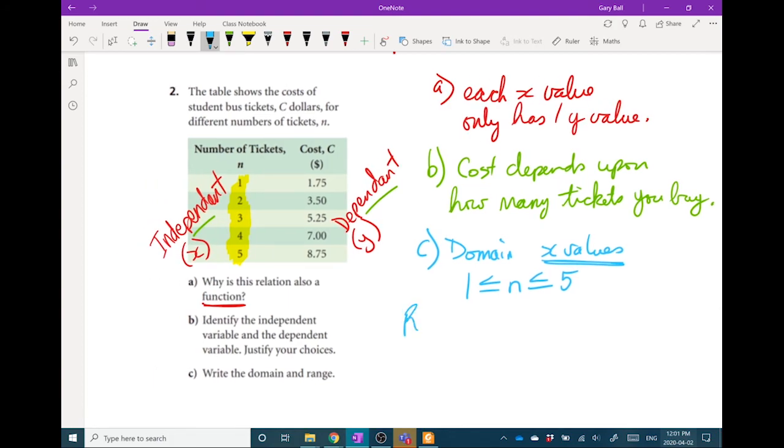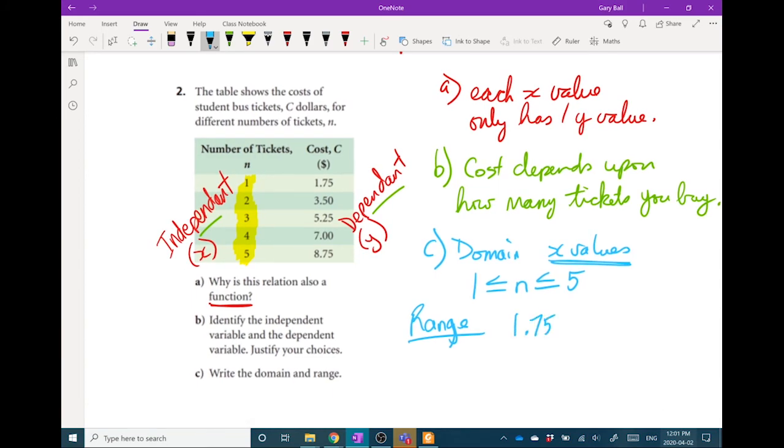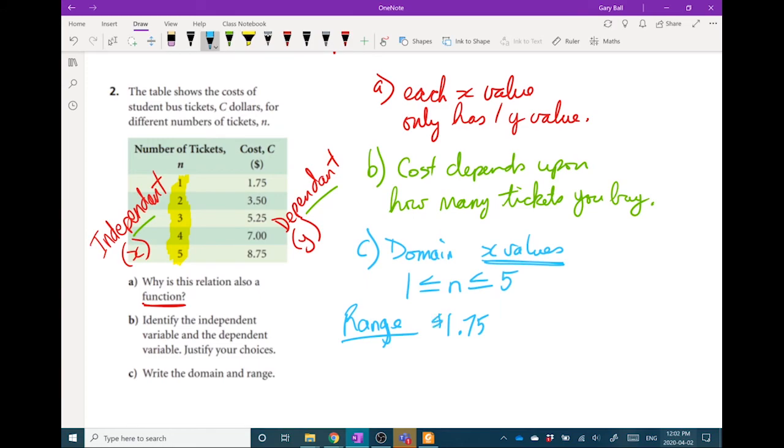Range, that's my C value. I look at it. My smallest number is 1.75. I'm going to put a dollar sign in there. The variable I'm using is C. So C is greater than or equal to $1.75, and my largest number is $8.75. So C is somewhere in between $1.75 and $8.75. That's my range.